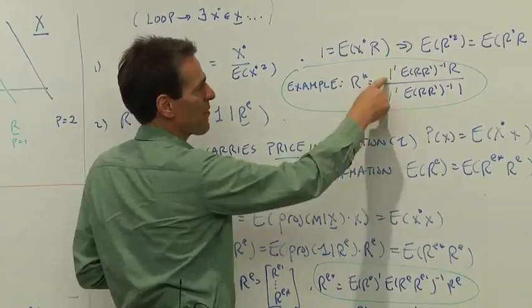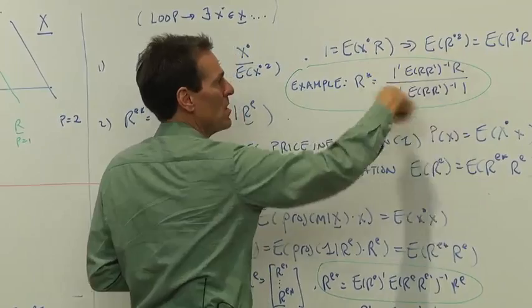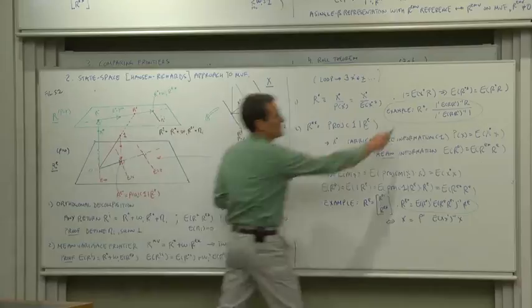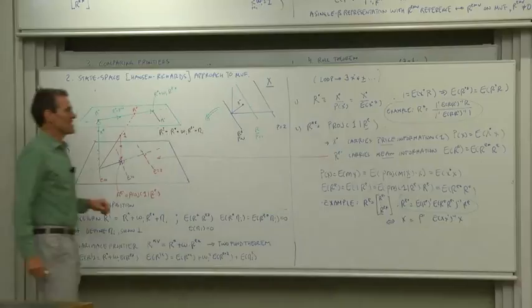If you'd like an example of r star, well, the example of x star was price, expected payoff, payoff prime, payoff. So r star you can form by a set of returns in the same way. That's the x star and then divide by the price of x star. It's based on means and second moments, just like everything else we've been looking at.